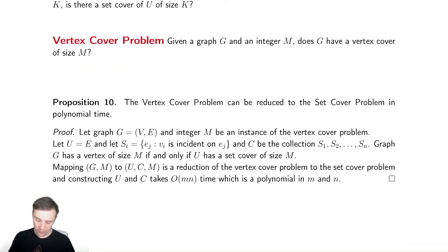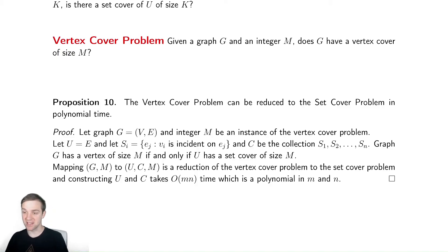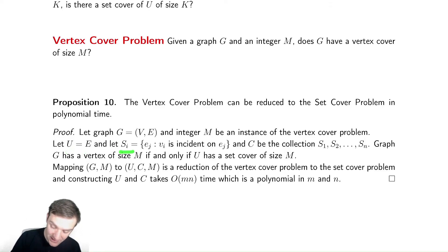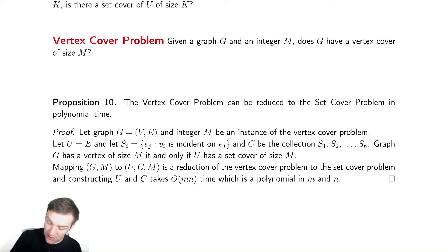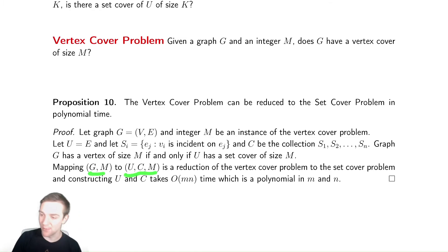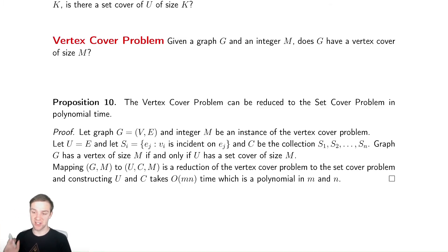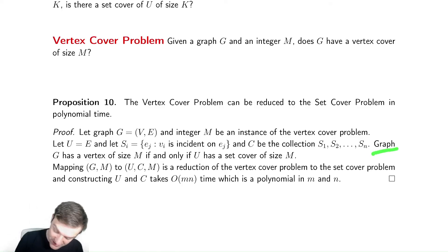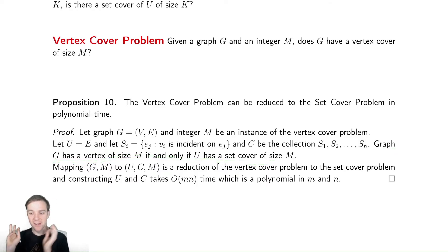Formally, we have a graph G and an integer M as an instance of the vertex-cover problem. We define U as the set of edges, and SI as the set of all edges incident on vertex VI. The collection C is S1 through SN. Graph G has a vertex-cover of size M if and only if it has a set-cover of size M. Computing all these quantities takes O(M·N) time.